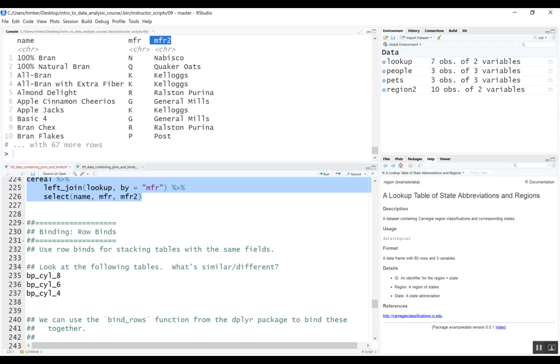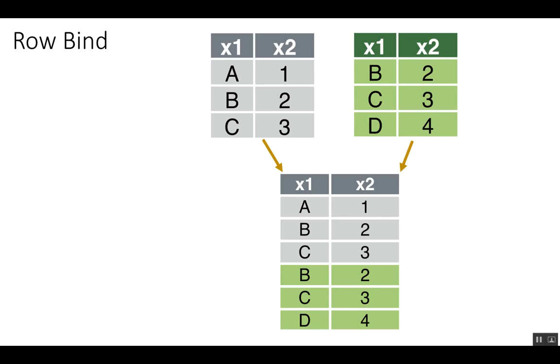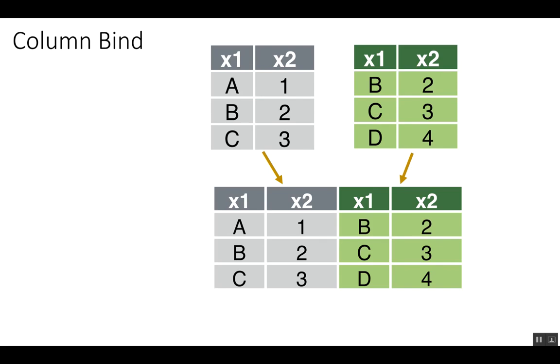Now let's move on to binding rows. Binds are a little different from joins — we don't need to match on keys. With a column bind, you use it when you know every single row in the first table matches every row in the second table. Row binds are similar — you're just stacking tables on top of each other. If the variable names are the same, you go ahead and stack them. With a column bind, you join them side by side with no key being merged on.